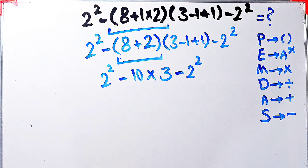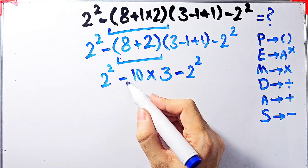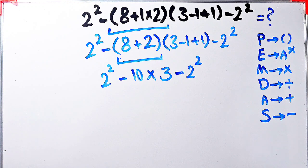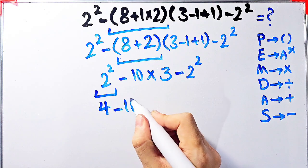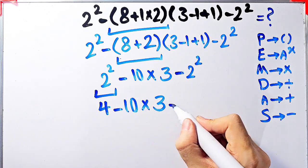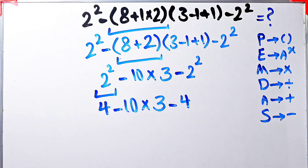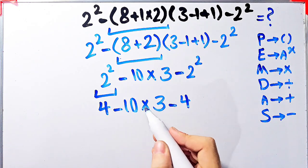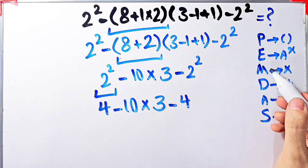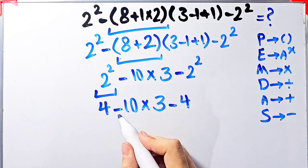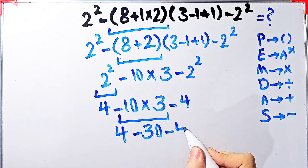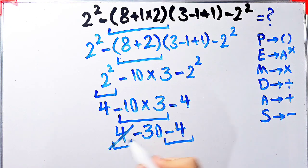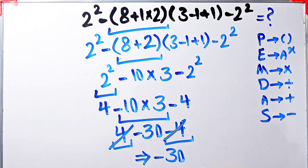Now we have exponent, subtraction, and multiplication. According to the PEMDAS rule, first we simplify the exponent: 2 to the power of 2 equals 4. Now we have 4 minus 10 times 3, then minus 4. We have subtraction and multiplication, so we do the multiplication first because it has higher priority. Negative 10 times 3 equals negative 30. Now the question is 4 minus 30 then minus 4. The final answer of this question equals negative 30. Thanks for watching.